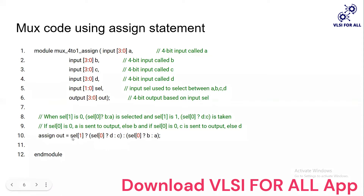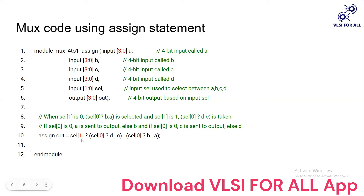When select line 1 is 0 and select line 0 is also 0, A is assigned to the output. When select line 1 is 0 and select line 0 is 1, B is assigned to the output. Then, if select line 1 is 1 and select line 0 is 0, the combination is 1-0 and C is assigned to the output. When select is 1-1, D is assigned to the output.